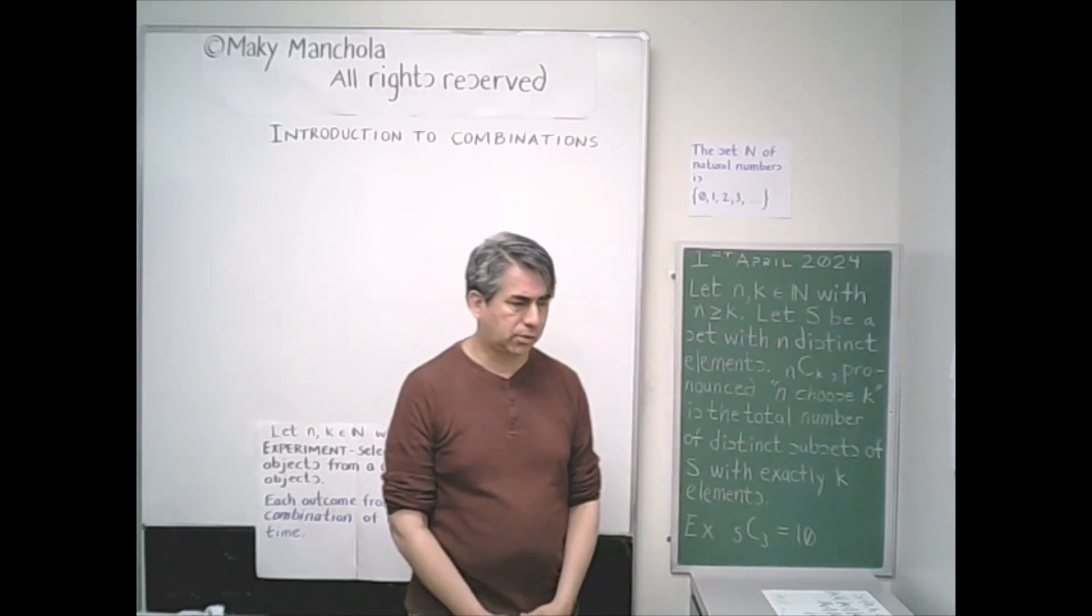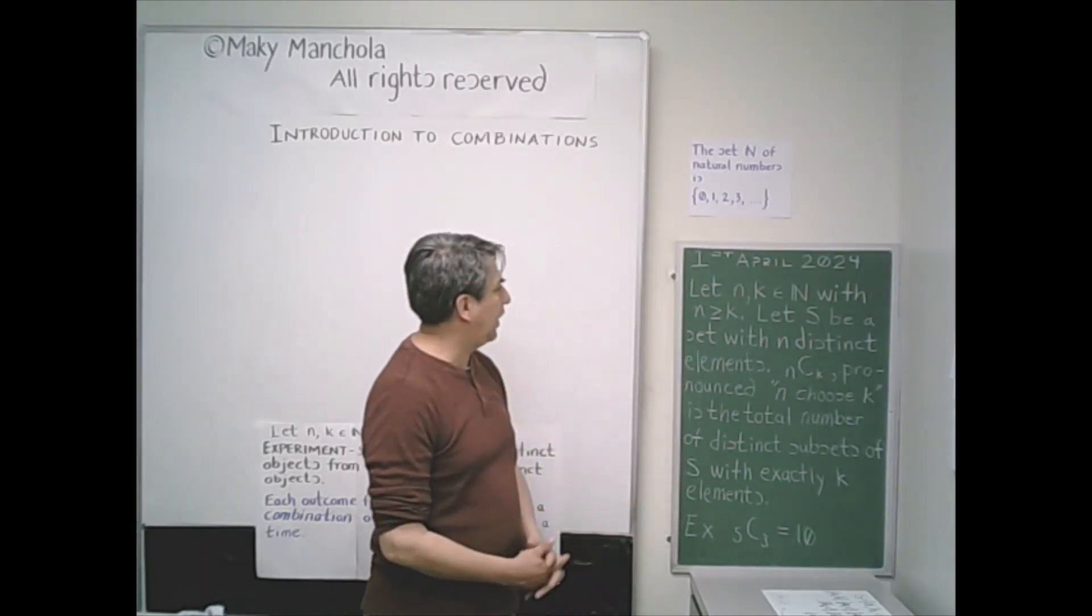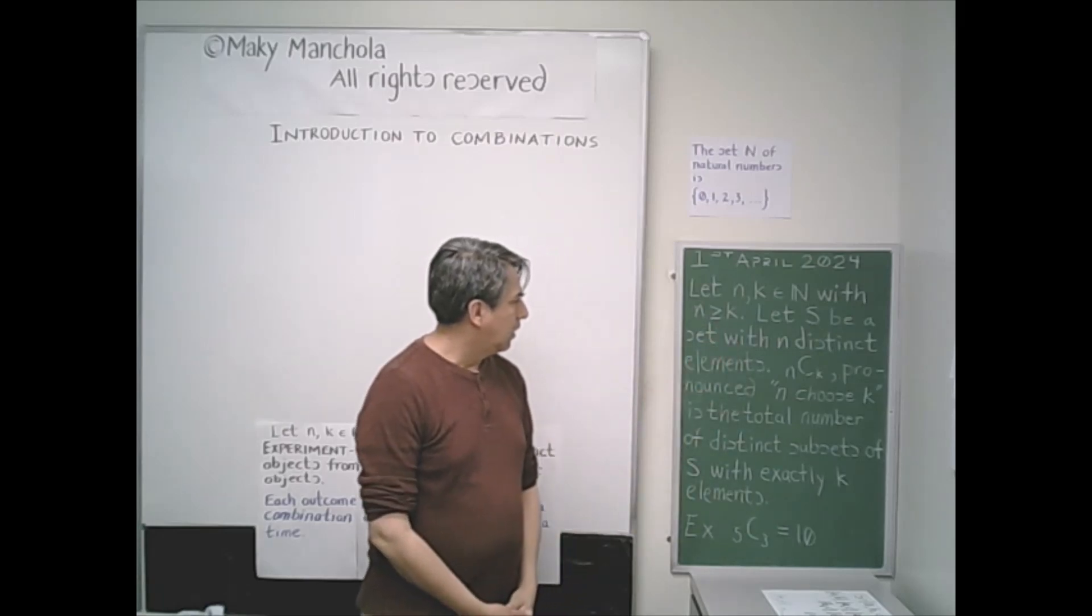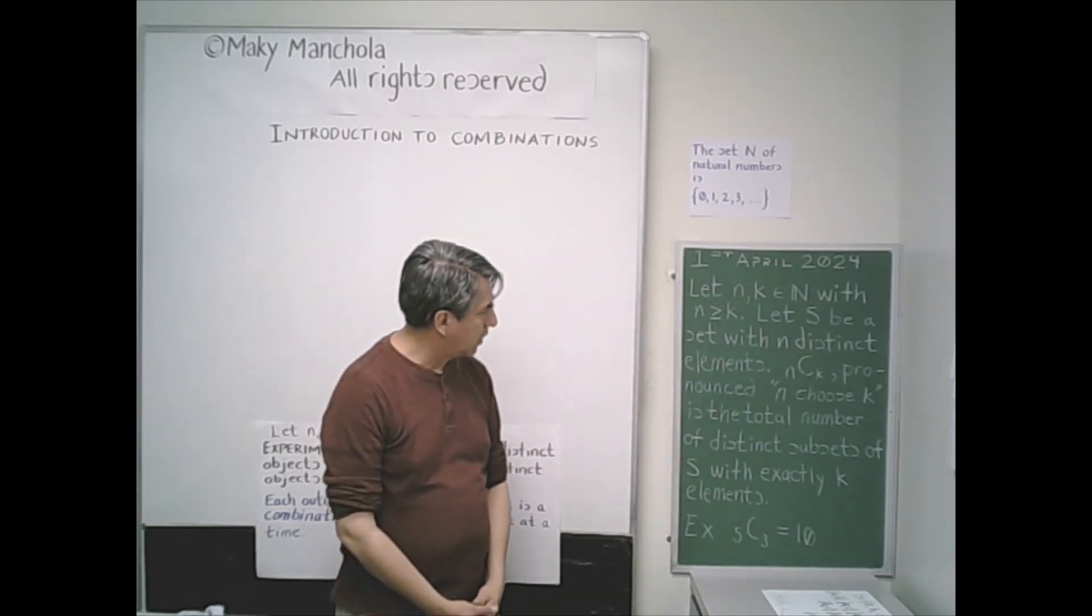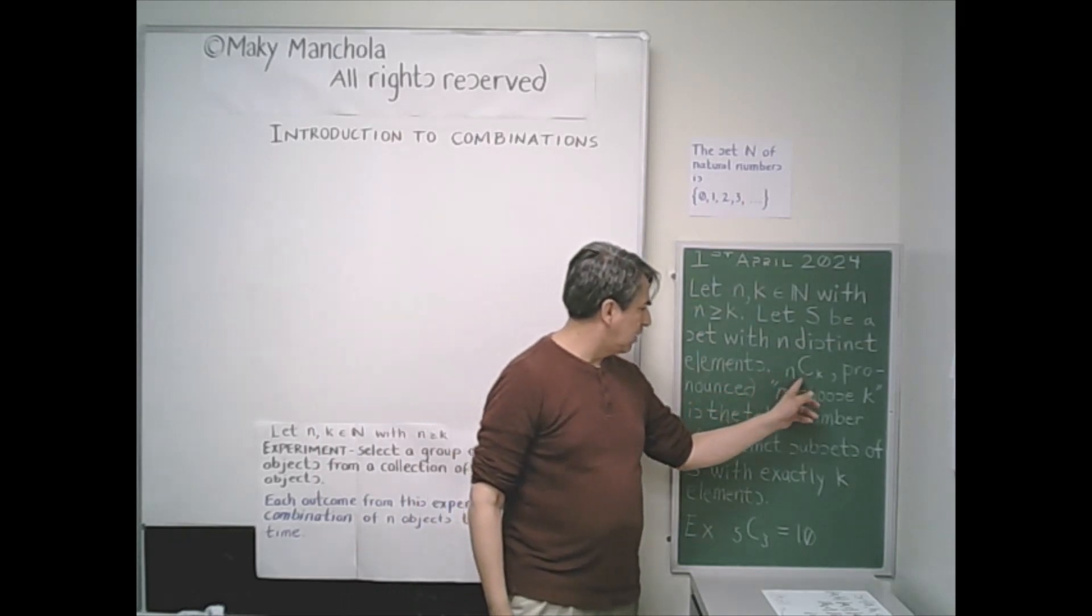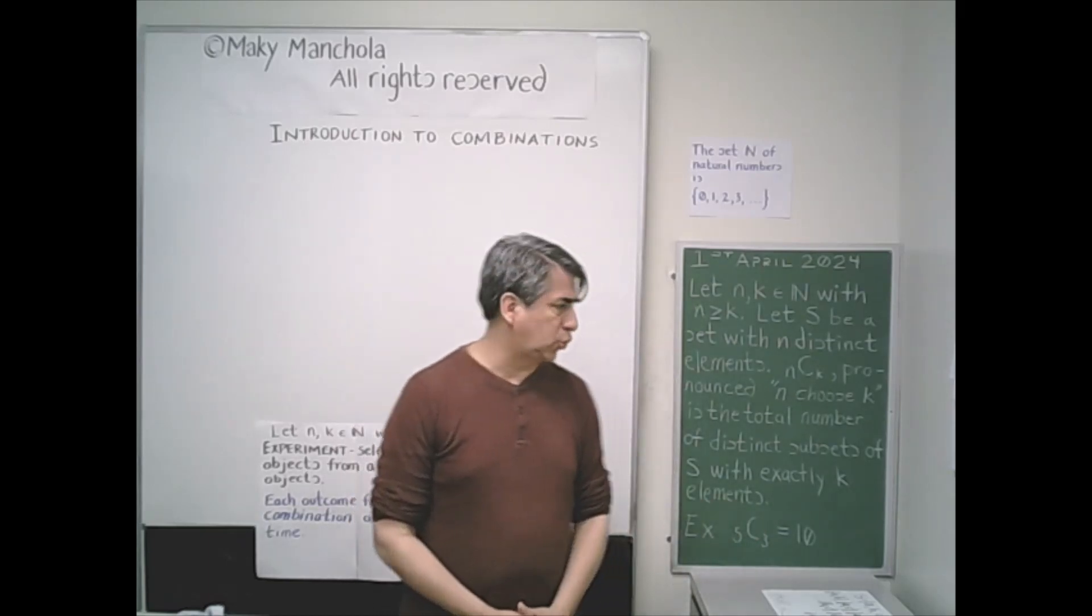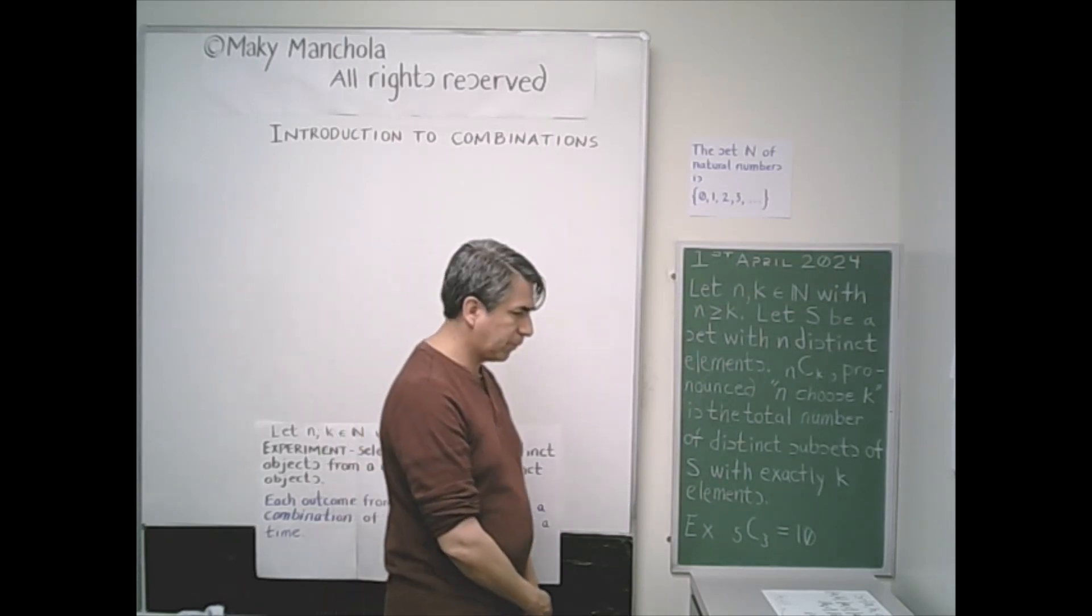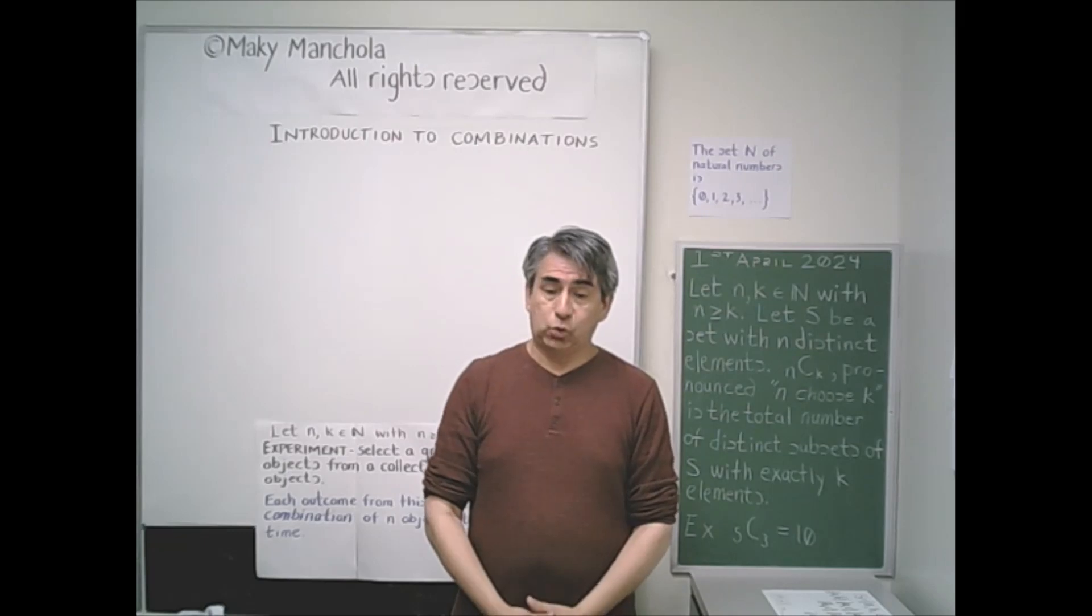Let's introduce combinations. First, let N and K be natural numbers with N greater than or equal to K. Let S be a set with N distinct elements. N choose K is the total number of distinct subsets of S with exactly K elements.